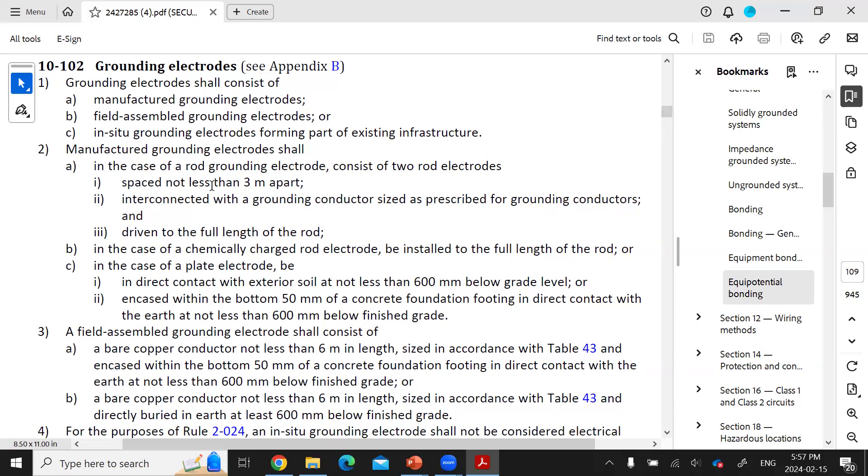Some of the in-situ grounding electrodes that you could be using are buried metal water pipes, or a metal object or device buried in or driven into the ground that makes intimate contact with the earth. A grounding conductor is then electrically and mechanically connected to it.